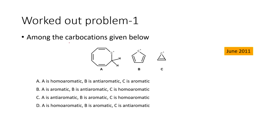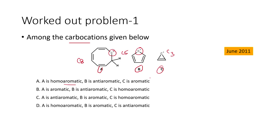Let us start with the first problem. Here a couple of carbocations are given: compound A, compound B, and compound C. Between these three compounds, which carbocations are going to be either aromatic, anti-aromatic, or homo-aromatic? We have a cyclooctane system, a cyclopentane system, and a cyclopropane system — C8, C5, and C3 systems. Compound A is homo-aromatic, compound B is anti-aromatic, and compound C is aromatic.